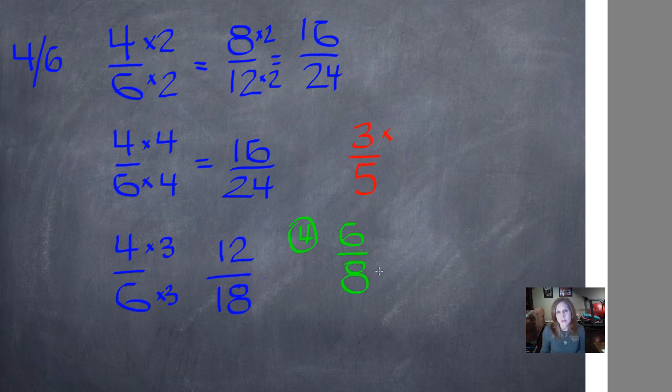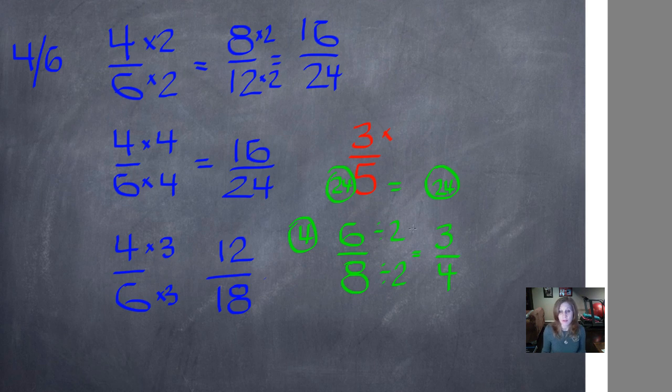Now, is there a number that I can divide by both six and eight? Yeah, two. So one equivalent fraction could be gotten by dividing. Six divided by two is three. And eight divided by two is four. So six-eighths is equivalent to three-fourths. Let's cross-multiply just to see. Eight times three is 24. And four times six is 24. And because those two numbers are equal, they're equivalent, six-eighths is equivalent to three-fourths.